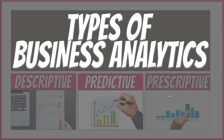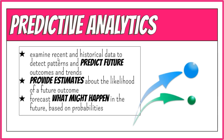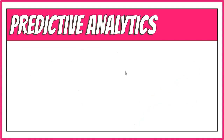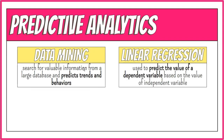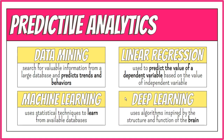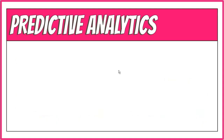This leads us to predictive analytics. Predictive analytics examines recent and historical data to detect patterns and predict future outcomes and trends. It provides estimates about the likelihood of a future outcome and forecasts what might happen based on probabilities. Tools used in predictive analytics include data mining, which searches for valuable information from a large database and predicts trends and behaviors, and linear regression analysis, which is used to predict the value of a variable based on the value of another variable. Machine learning and deep learning techniques are also used to predict what is likely to happen in the future.